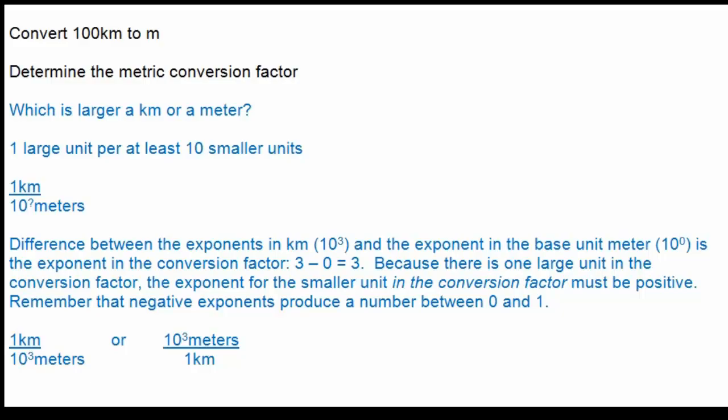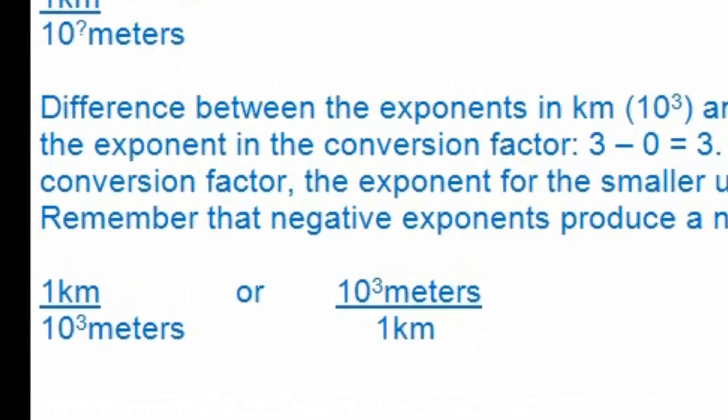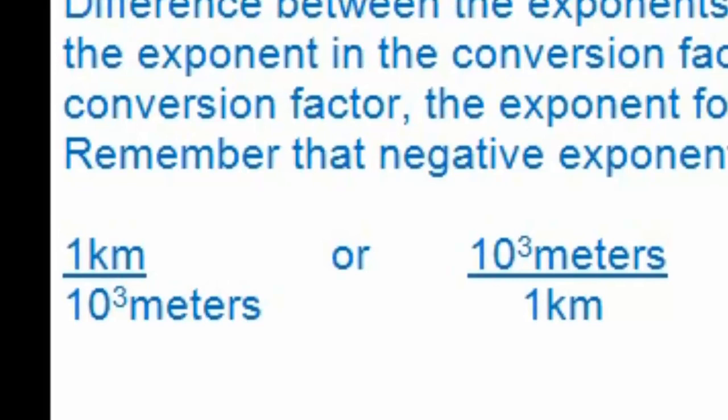Using this method, the exponent in the conversion factor must always be positive, because a negative exponent produces a number between 0 and 1. Since we need at least 10 small units to make up the one larger unit, the exponent must be positive. The conversion factor between kilometers and meters can be written in two ways: one kilometer per 10³ meters, or 10³ meters per one kilometer.